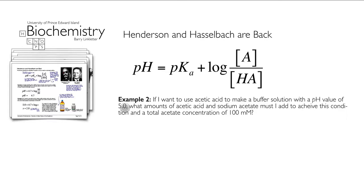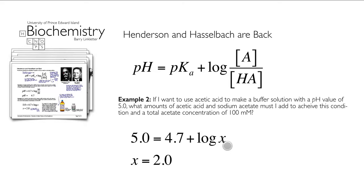What if you want pH 5 instead of 4.7? Use Henderson-Hasselbalch: pH 5 = 4.7 + log([A⁻]/[HA]). Solving gives a ratio of 2:1, because the log of 2 is 0.3. So you want twice as much sodium acetate as acetic acid — make sure everything totals to 100 millimolar, and you have your pH 5 buffer.